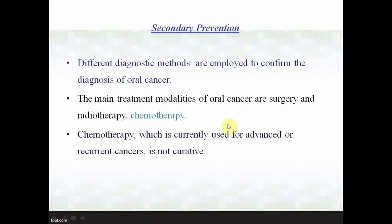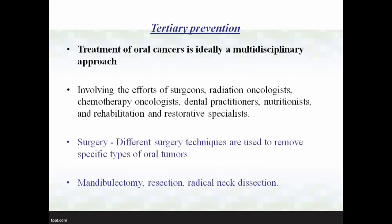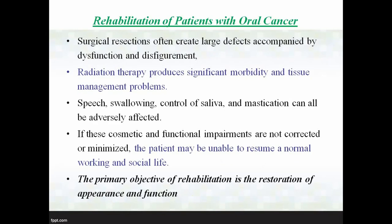Secondary prevention involves chemoprevention when disease has already occurred, aiming to prevent its progression. Once diagnosed, treatment depends on stage — radiotherapy and chemotherapy can be provided. Chemoprevention agents include vitamin A, selenium, and phenols. Tertiary prevention involves disability limitation and rehabilitation through a multidisciplinary approach: surgery, glossectomy, resection, radical neck resection, radiation therapy, and chemotherapy. Rehabilitation focuses on speech, swallowing, control of saliva, and mastication. If cosmetic and functional impairments are not corrected, the patient may be unable to resume a normal working and social life.